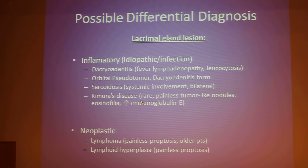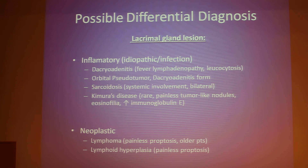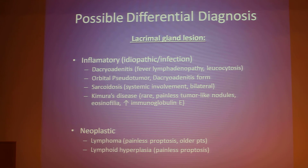Kimura's disease is something rare — it's a chronic inflammatory condition and a rare cause of a tumor-like mass in the head and neck. It typically presents as painless tumor-like nodules and can be associated with regional lymphadenopathy. Eosinophilia and elevated immunoglobulin E levels are almost always present. In the absence of these findings, the diagnosis of Kimura's disease is less possible in our case.